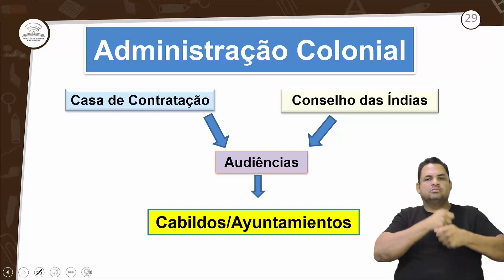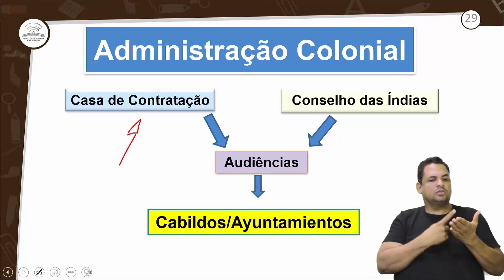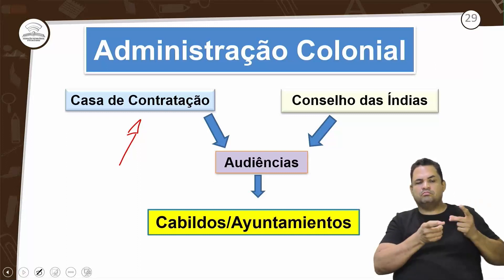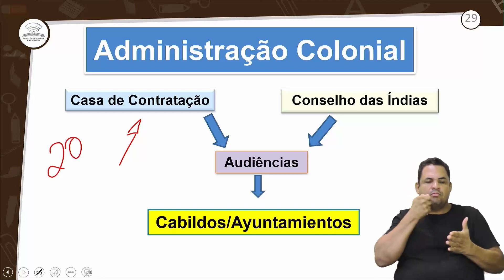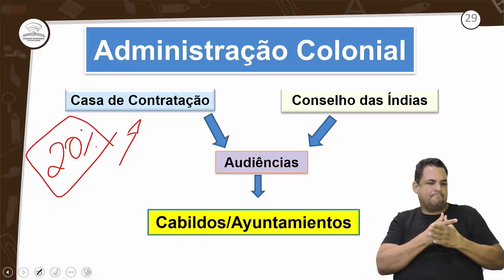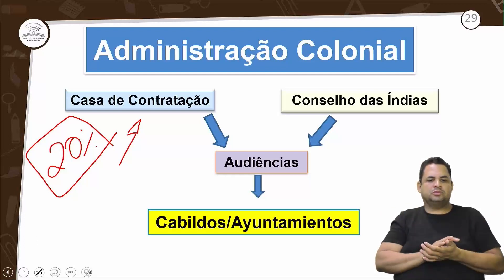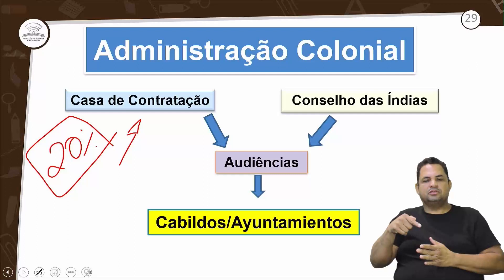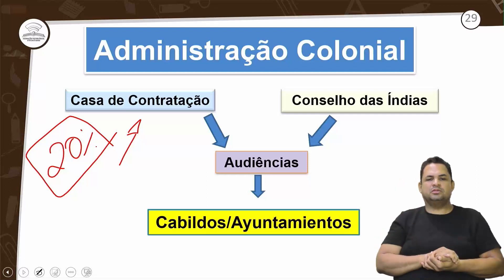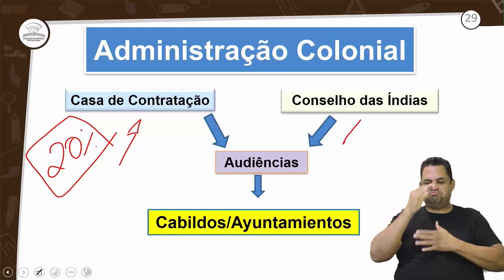A administração do sistema colonial: temos a Casa de Contratação, que organizava o comércio e fiscalizava o pagamento do quinto — 20% do ouro extraído era pago à coroa espanhola. O Conselho das Índias funcionava como o Supremo Tribunal Federal: nomeava funcionários e regulamentava a administração das colônias. Os crioulos não podiam ocupar o Conselho das Índias.